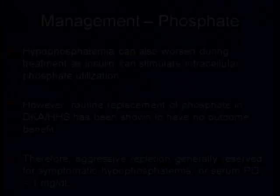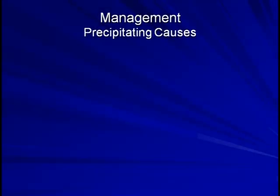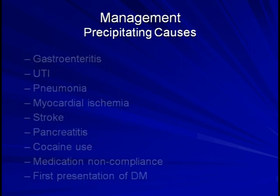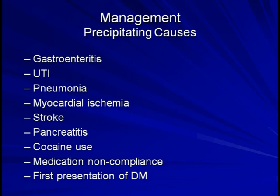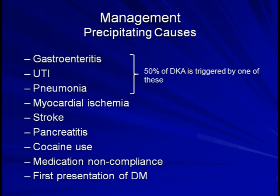Another major component of treatment is the identification and management of the precipitating cause of the hyperglycemic crisis. The list of potential causes is quite long, but statistically the three most common triggers are gastroenteritis, UTIs, and pneumonia, leading to at least 50% of DKA events. Because myocardial ischemia is another important precipitant, every patient with DKA or HHS requires an EKG and at least a basic assessment for ACS.